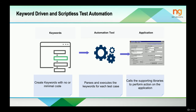In this slide, you can see that the first step is we create the keyword with no or minimal code, which is also known as a scriptless approach. Then our automation tool parses and executes the keywords for each test case, which in turn calls the supporting libraries to perform the action on the application. We will be using these concepts in later videos, where we will create keywords from scratch with no or minimal coding required, and use these keywords for our test cases.